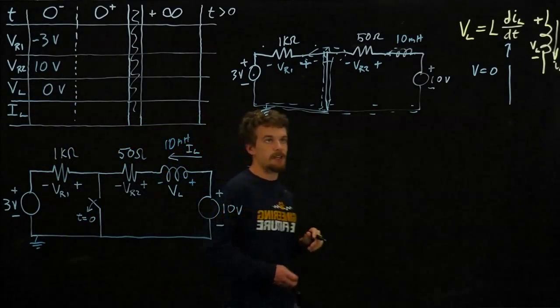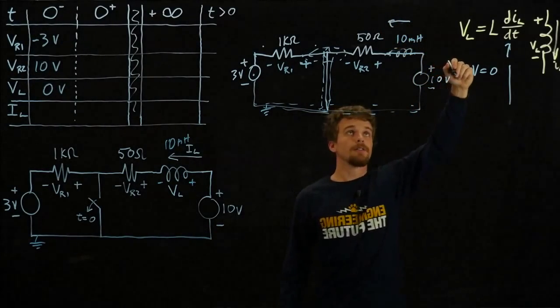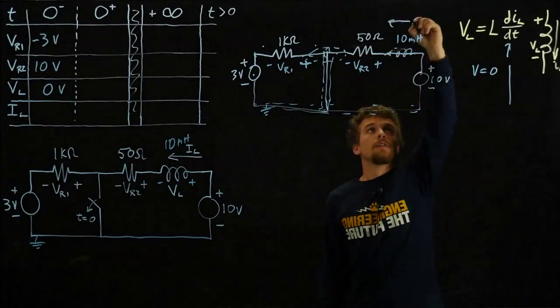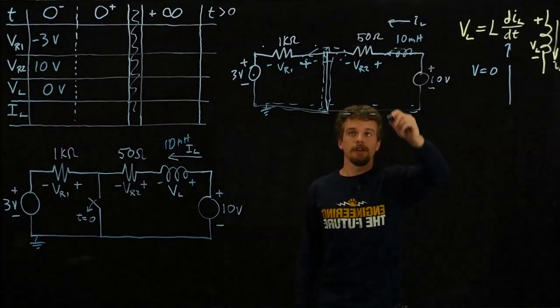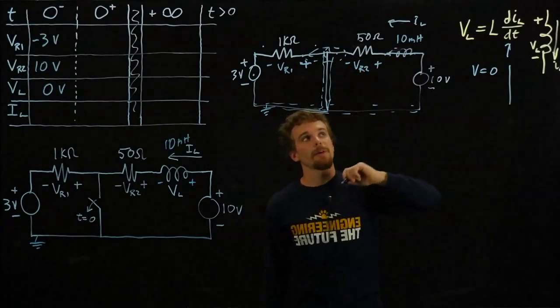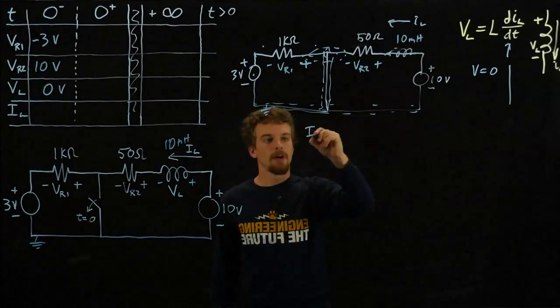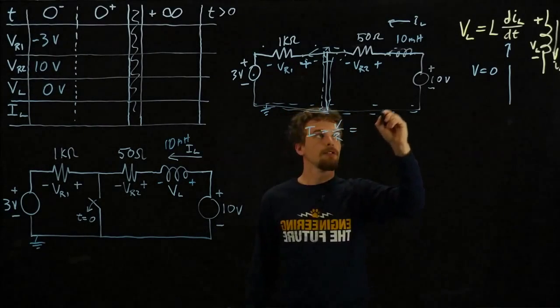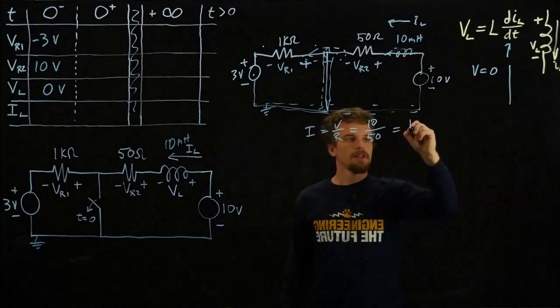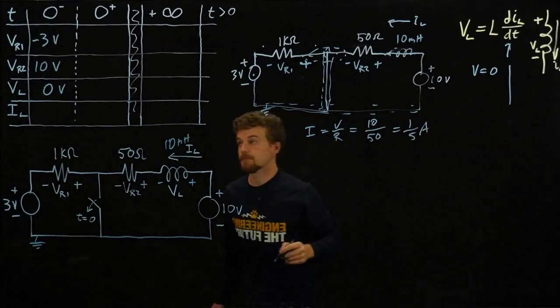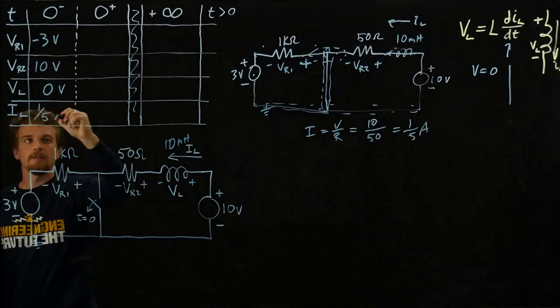We can solve for the current I_L through this inductor right before the switch opens. We have the voltage drop across this resistor, so we can get the current by I equals V over R. It's equal to the 10 volt drop over a 50 ohm resistor, which equals one-fifth of an amp. So I_L at T zero minus equals one over five amps.